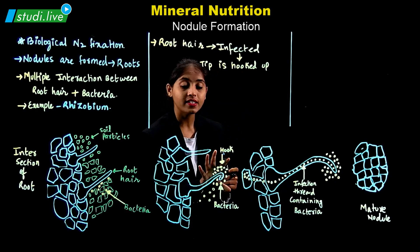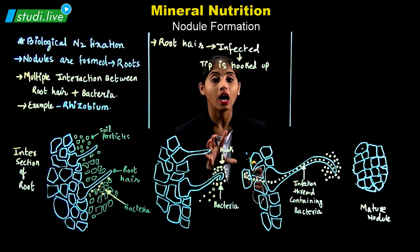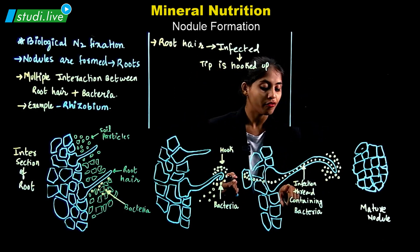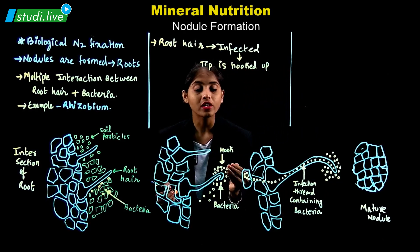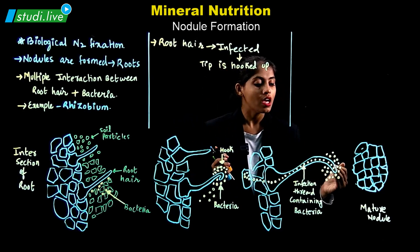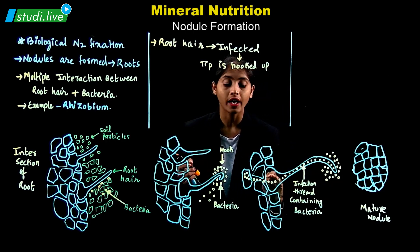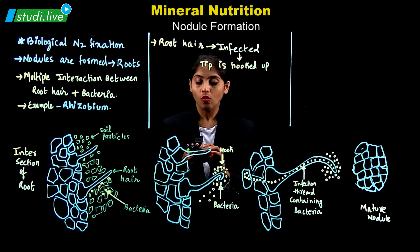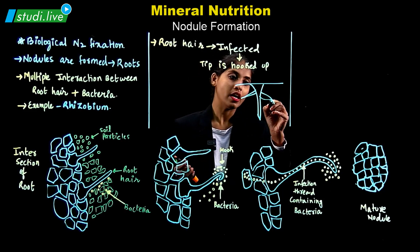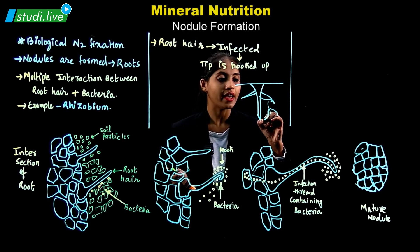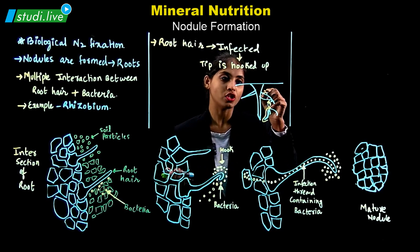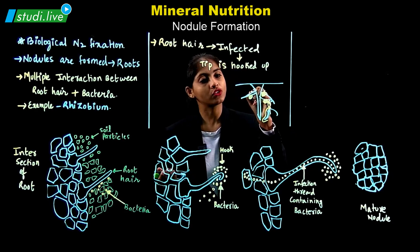Once this stage occurs, the root hair allows the bacteria to enter, which is shown in the third stage. The infection thread containing the bacteria enters — the allowance of the bacteria has already taken place and the entire colony enters. They are not just stopped in the root hair but enter inside the root. If one root hair area is permitted, the bacteria will be transported, and nodules will be forming in different parts of the root.